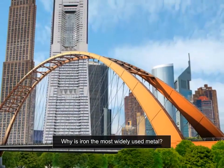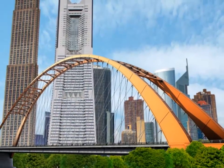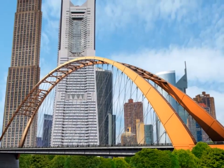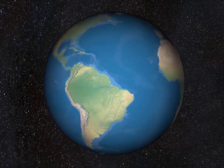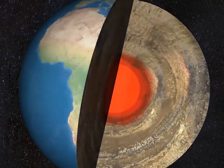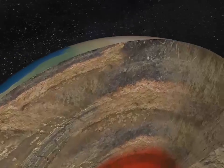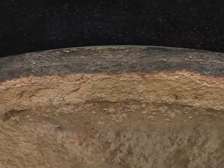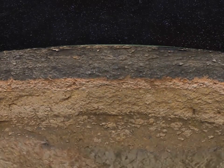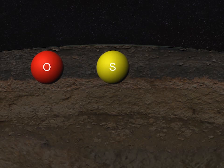Why is iron the most widely used metal? The main reason is that it is strong and relatively inexpensive. Iron is the most abundant metal found in the Earth's crust. As it is a reactive element, it does not exist as a metal in nature, but is found in chemical combinations with other elements such as oxygen, sulfur, and carbon in the form of minerals.